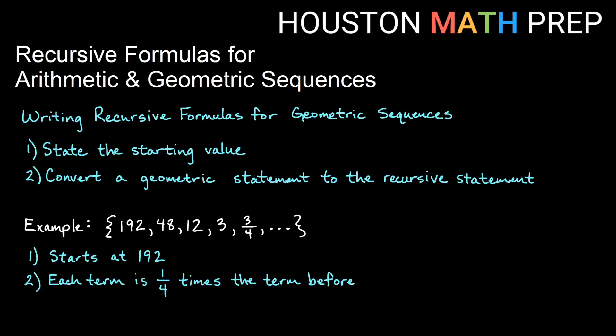Each term is 1 fourth times the term before it. So this first statement says that a1 is 192. The second statement says each term is 1 fourth times the term before. And that will start after the first term, so that will start at term number 2.